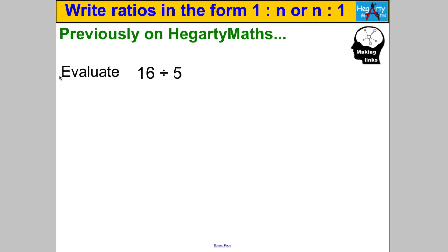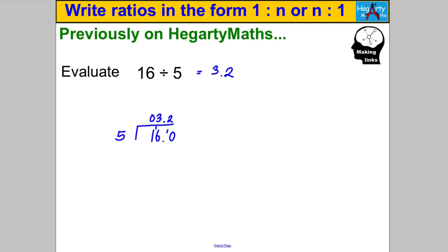First, let's check some prior knowledge. Pause the video and double-check you can evaluate things like 16 divided by 5. You would do this by short division: does 5 go into 1? No — carry that into the next column. 5 goes into 16 three times (3×5=15), remainder 1. Then 5 goes into 10 twice, so the answer is 3.2.